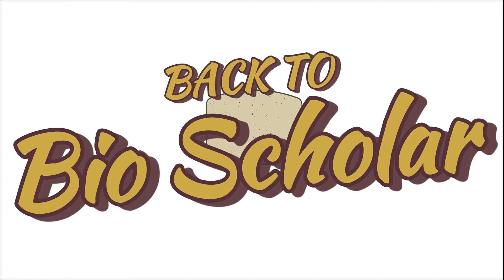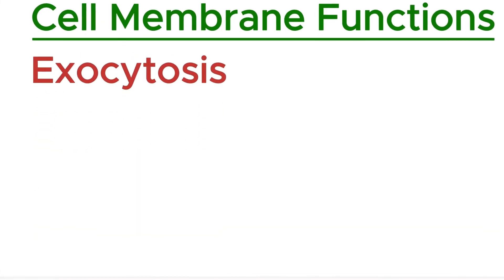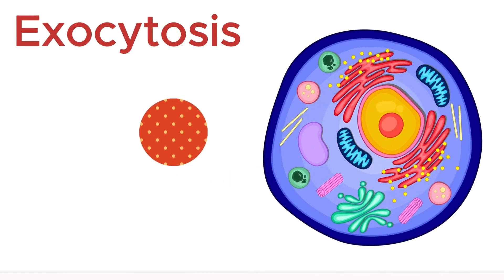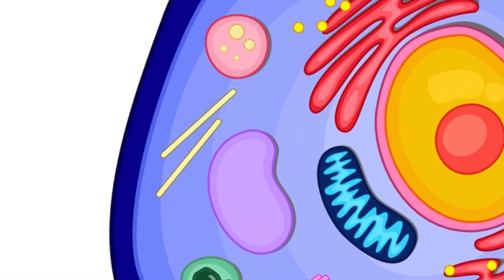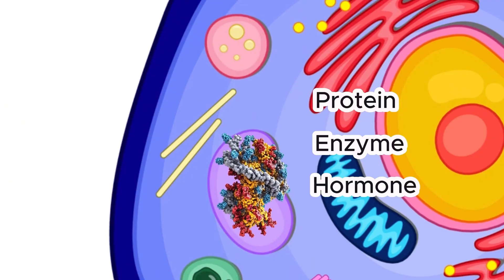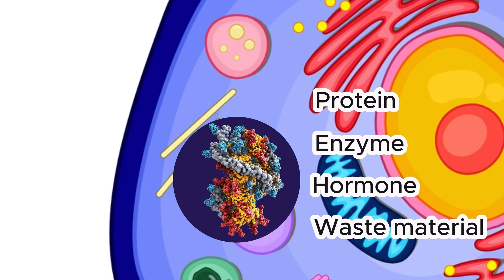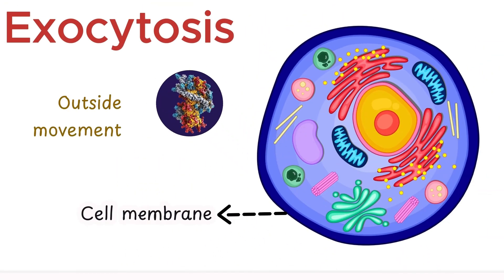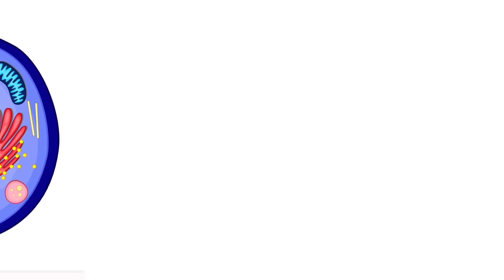Welcome science enthusiasts to another exciting video on cell membrane function. Today we will discuss exocytosis, a bulk transport mechanism which transports materials out of cells. When something is synthesized — let's say a protein, enzyme, or hormone, or some other kind of waste material is produced — it needs to move out of the cell. This outside movement of material is called exocytosis.